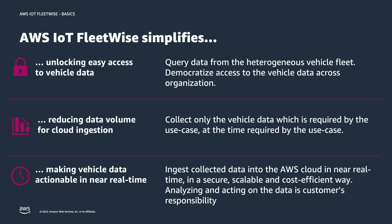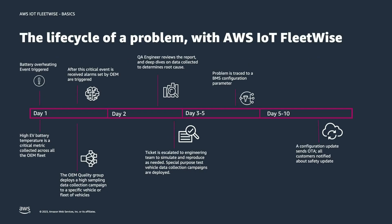What does this look like in the lifecycle of a real problem with AWS IoT FleetWise? Consider battery overheating: an event is triggered, an alarm set by the OEM fires. With FleetWise, the OEM quality group can deploy a high-sampling data collection campaign for specific vehicles or the entire fleet. Based on that report and deep-dive data collection, you can find the root cause — and within roughly five to ten days, this can lead to an OTA update to fix the problem.